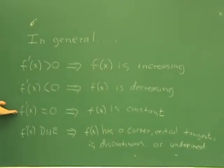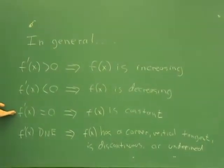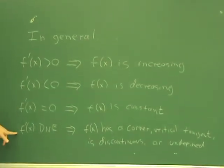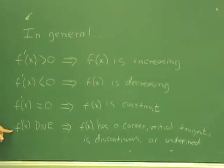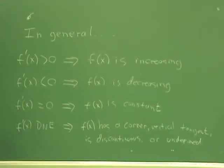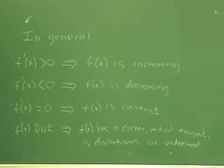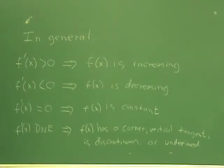If f prime is zero, then the function must be constant. And if the derivative ceases to exist, then f of x has one of those conditions that we talked about earlier in the course.